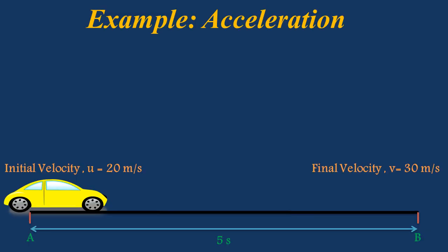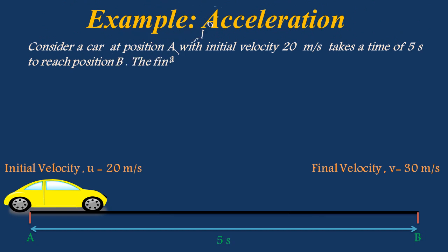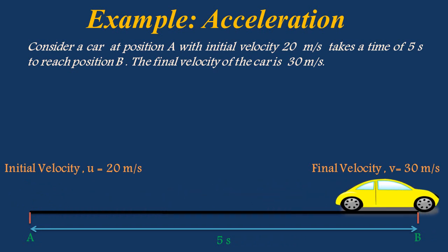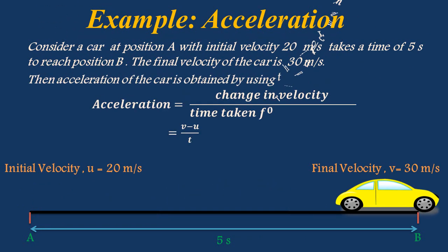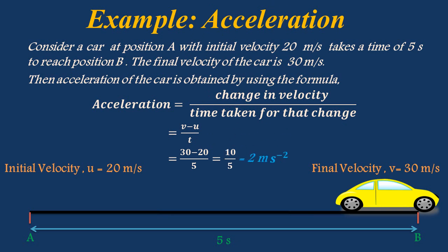Let's understand acceleration with an example. Consider a car at position A with initial velocity 20 meter per second that takes a time of 5 seconds to reach position B. After reaching position B, the final velocity of the car is 30 meter per second. Then, acceleration of the car is obtained using the formula A = (V minus U) divided by T. By substituting V as 30 m/s, U as 20 m/s, and T as 5 seconds, we get acceleration as 2 meter per second square.